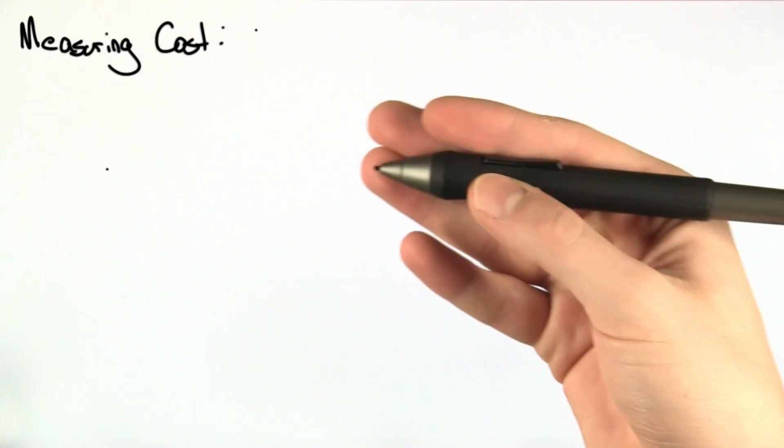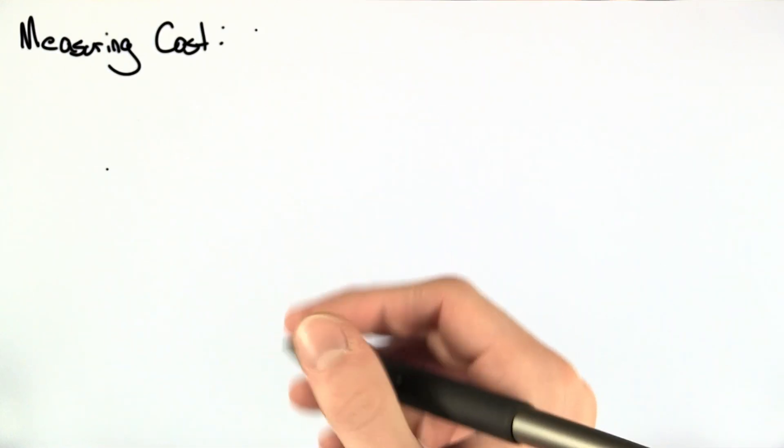In the first homework question, we have to determine which of the given functions scale linearly with the input list p. Let's go through the functions one by one.